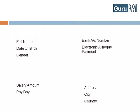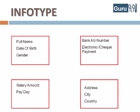So SAP clubs related information together into what is called an info type. Each info type has a corresponding number. Info type 2, known by the acronym IT0002, stores personal details.